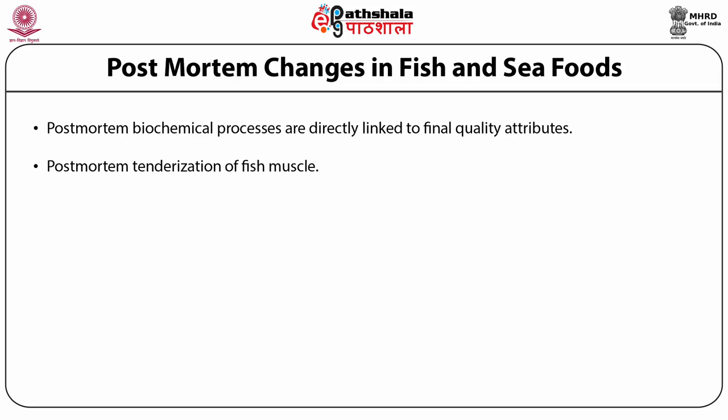Post-mortem tenderization is one of the most important quality attributes of fish muscle. Tenderization is enzymatic in nature. Physiochemical conditions — pH and osmotic pressure — may modulate the proteolytic action of endogenous enzymes. Loss of freshness is due to a complex combination of biochemical, chemical and physical processes and is followed by muscle spoilage due to microbial contamination. Autolytic modifications include protease action on proteins and connective tissue and also fat hydrolysis.